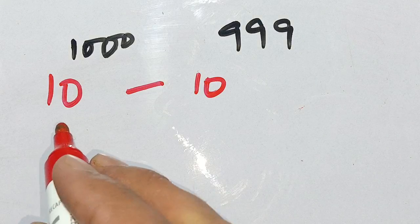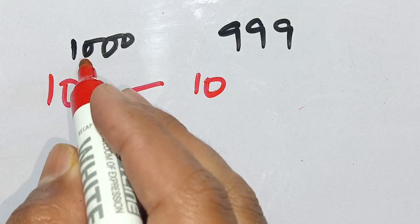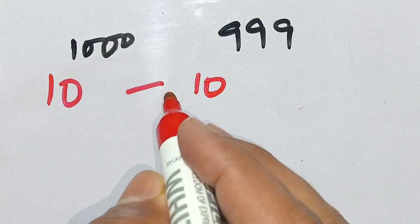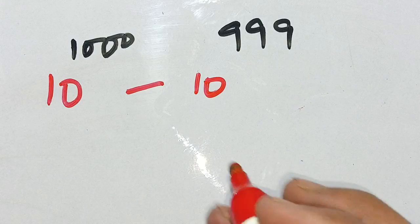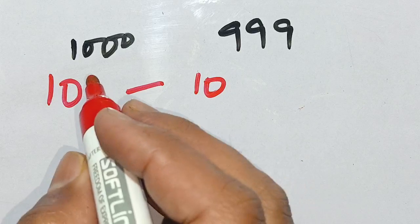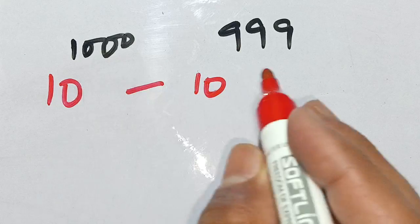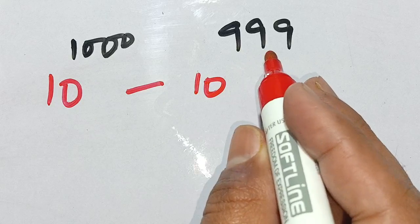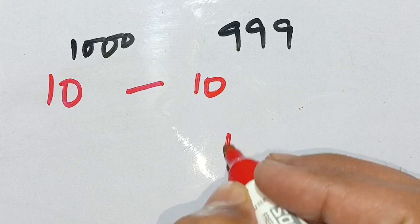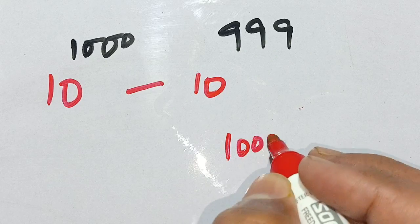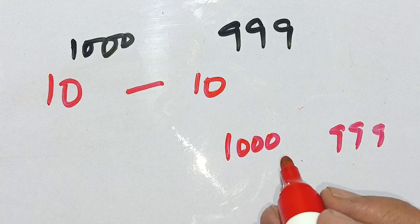Let us solve this exponential power problem: 10 raised to power 1000 minus 10 raised to power 999. Here the first power is 1000 and the second power is 999.